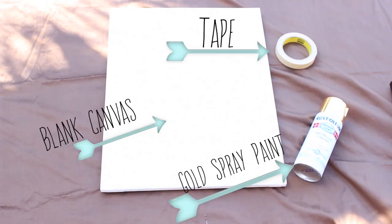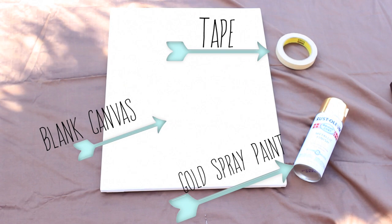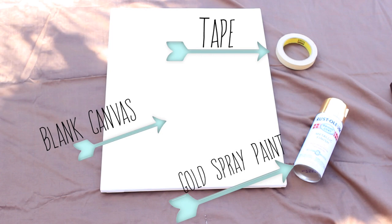For this DIY you're going to need a blank canvas which I got from Michaels for $8, tape which I got for $2 at Walmart, and gold spray paint which I got for $3 at Walmart.